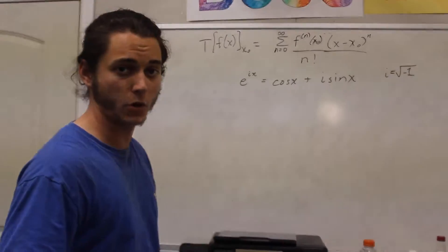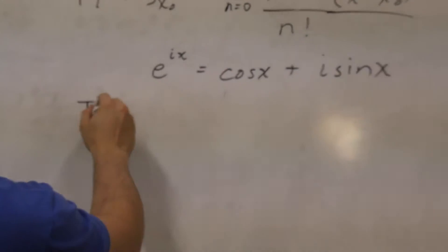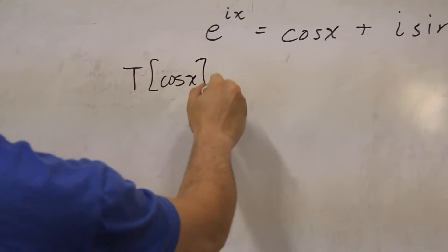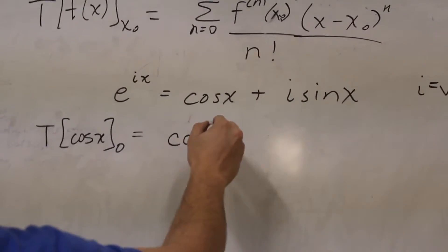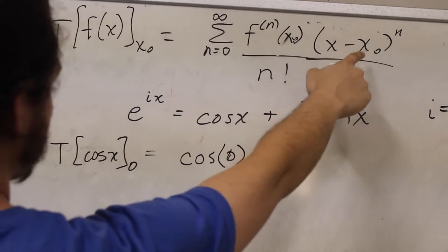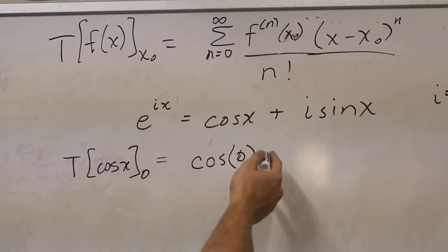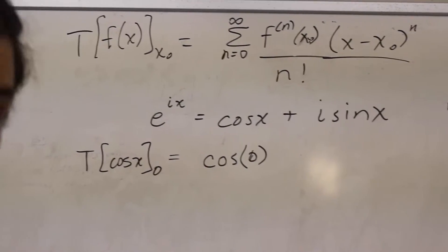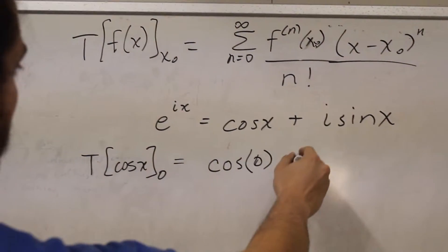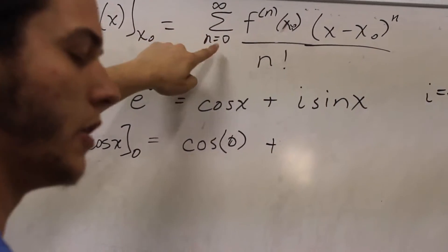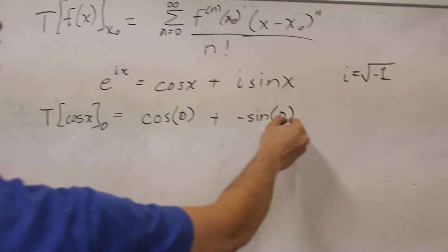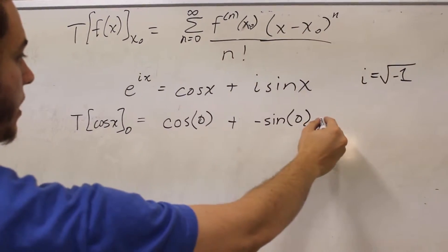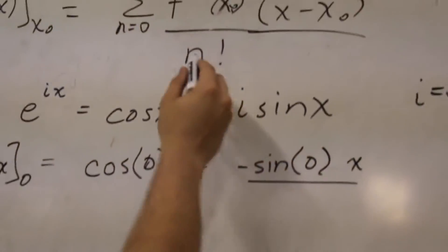So first let's look at the Taylor series of cosine. We're going to say the Taylor series of cosine of x, evaluated at point zero, is going to be: the first term is the zeroth derivative of the function — which is the function itself — at point zero, times x minus zero to the zero, which is one, divided by zero factorial, which is also one. So that's just cosine of zero. The next term is the first derivative — the derivative of cosine is negative sine — evaluated at zero, times x to the first power divided by one factorial.